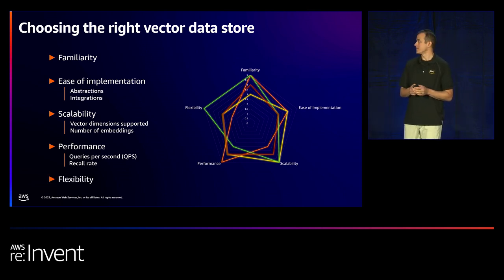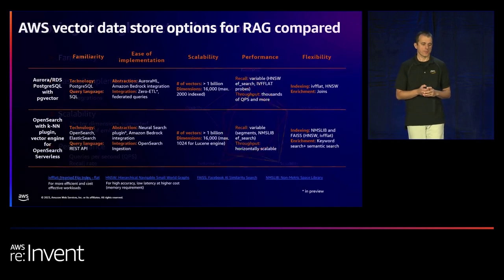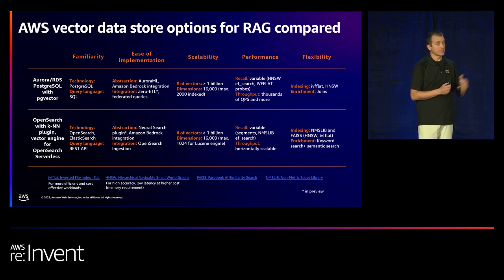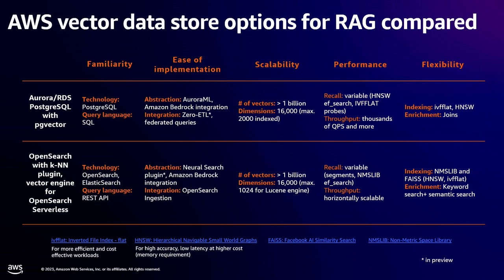Flexibility is another criterion — can you choose different indexing and query algorithms? Comparing PG Vector and OpenSearch across these dimensions, you'll notice that familiarity matters more. For scalability, they're pretty close — both can support over a billion vectors and up to 16,000 dimensions. From a performance perspective, both allow you to set an acceptable recall rate. These technical nuances are ultimately small, and customers today may not even hit those considerations.